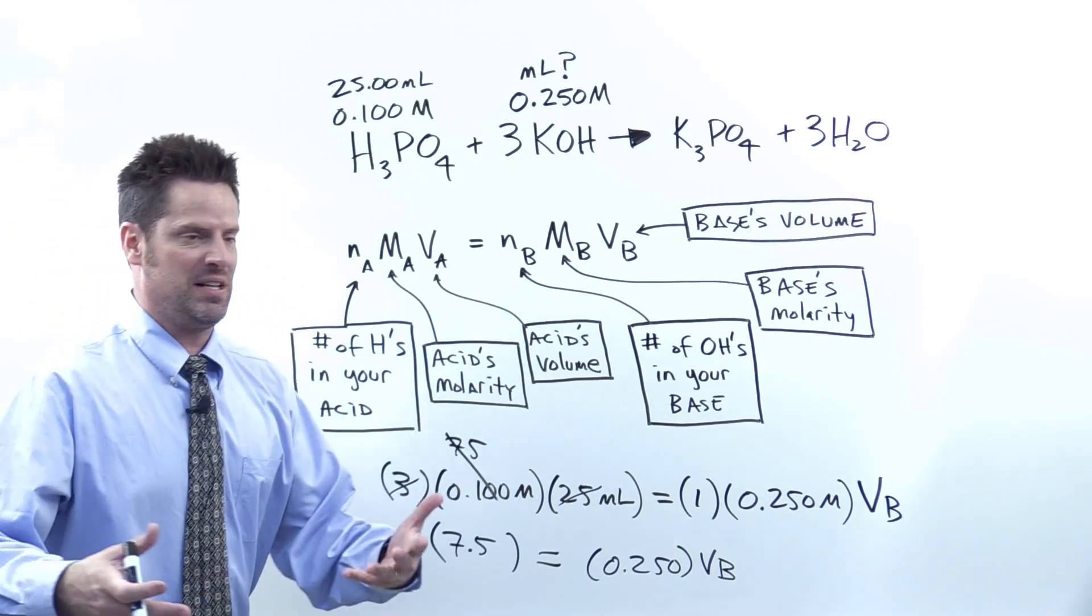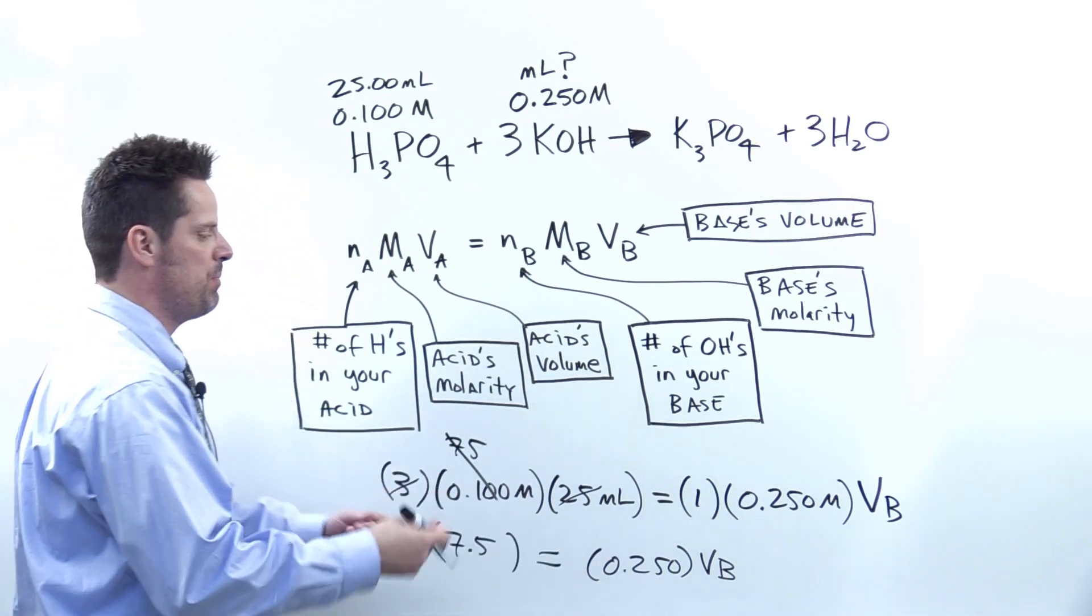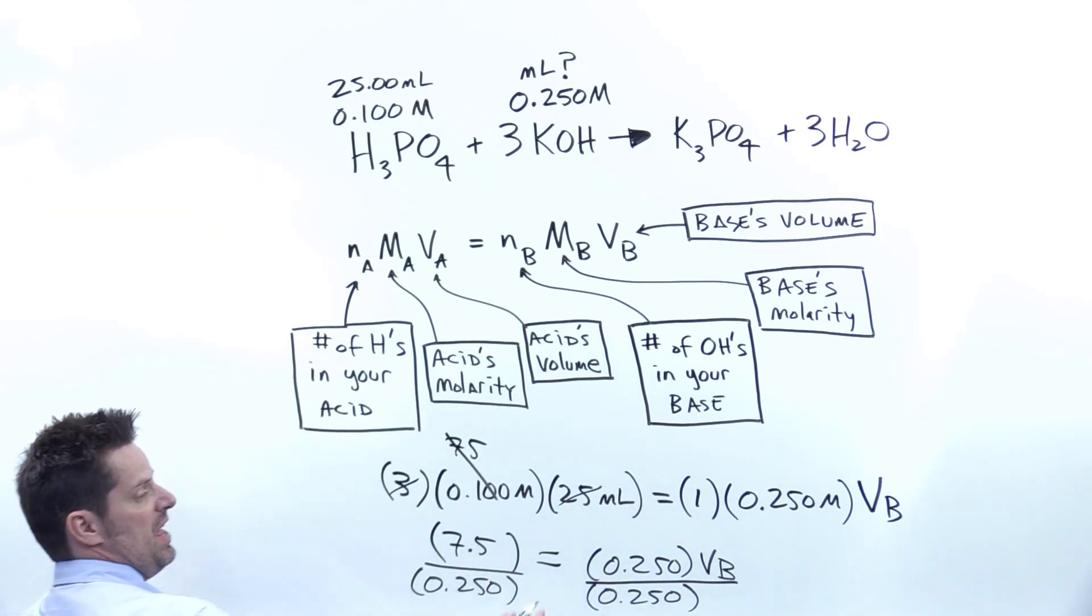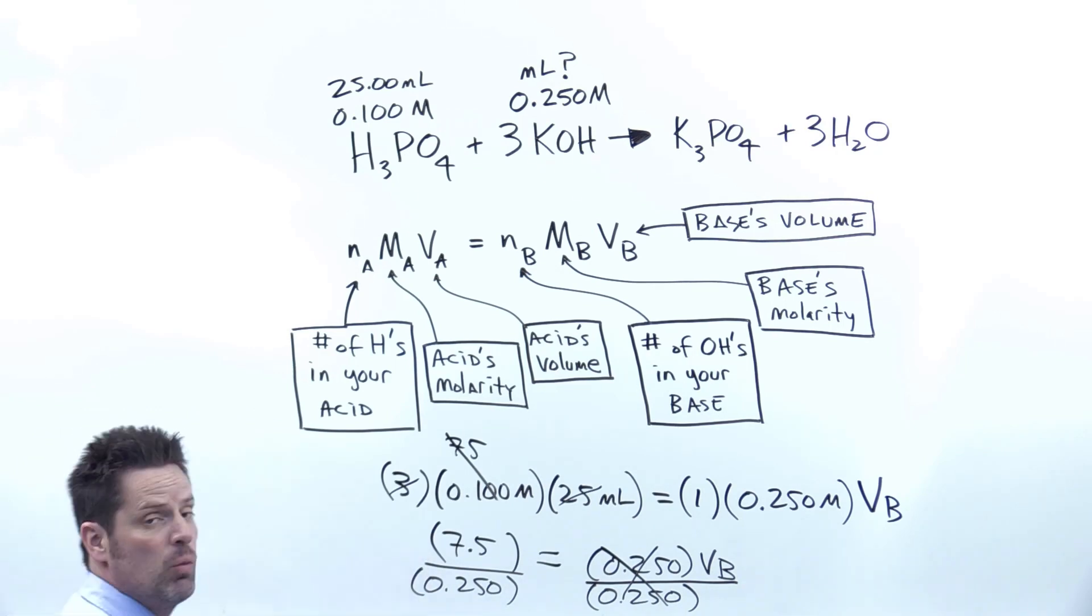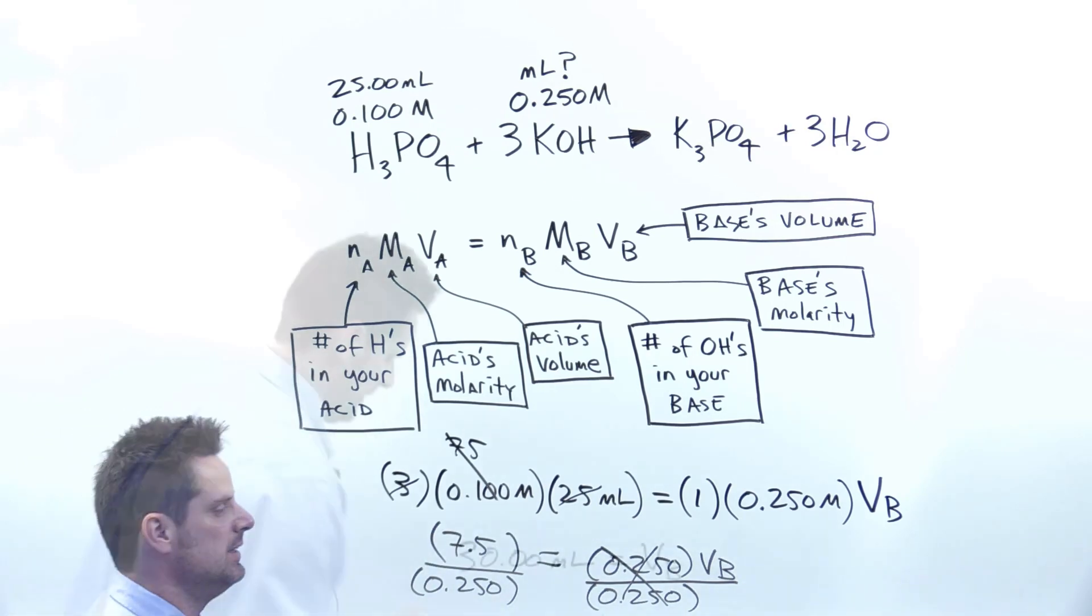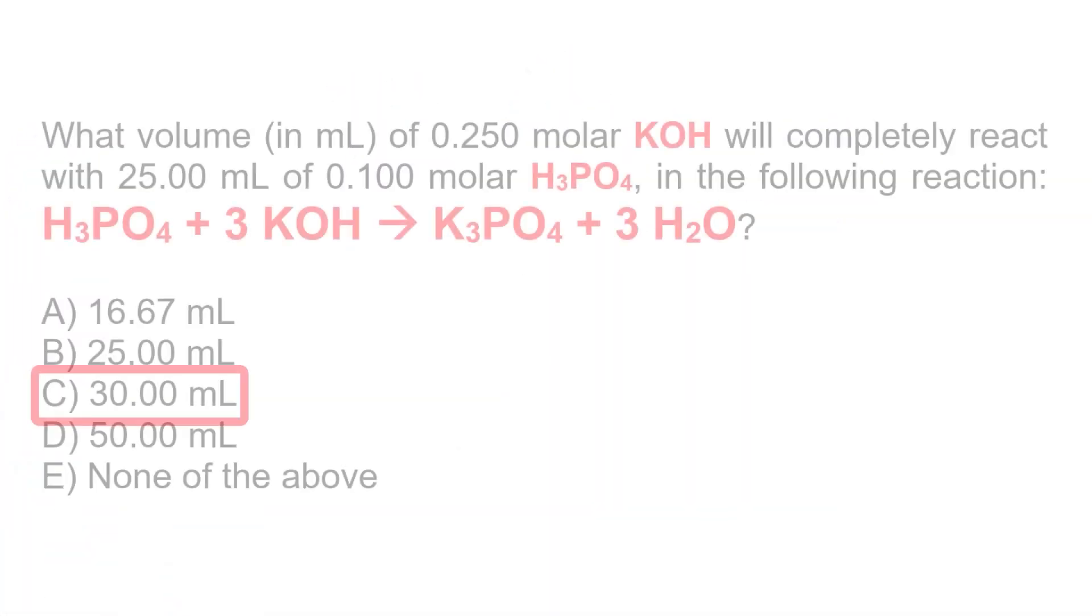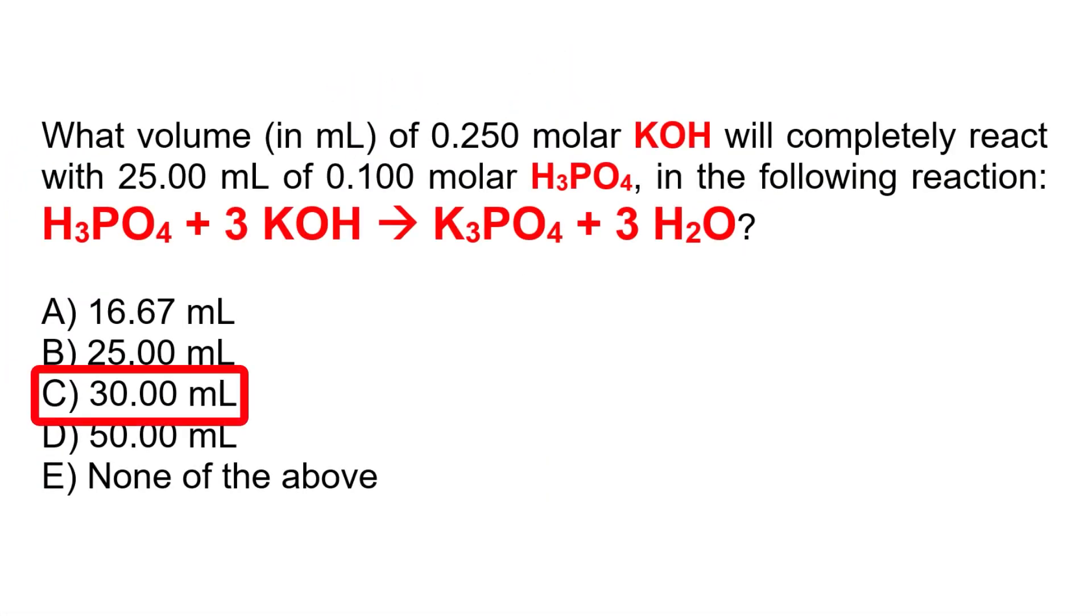Now to solve for Vb, the missing volume, I'm just going to divide both sides by 0.250. You'll see that that gets nullified on the right, and Vb comes down to this term. 7.5 divided by 0.250, which calculator-ly simplifies to 30 milliliters, which is, for this question, option C.